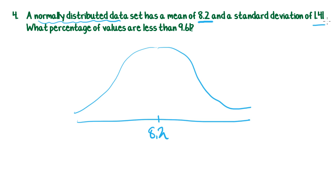Now we've got a standard deviation of 1.41 and we're looking for the point 9.61. So 8.2 plus 1.41, what do you know? It's exactly 9.61. So we've travelled one standard deviation up.